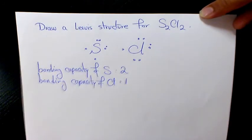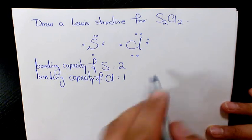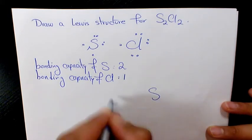The first step is to identify the central atom, which is usually the element with the highest bonding capacity, which in this case is sulfur. After that, we need to write the symbol for the central atom and then arrange the symbols for the rest of the elements. So for S2Cl2, we arrange it like this: Cl, S, S, Cl.